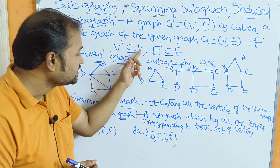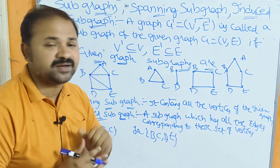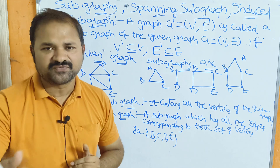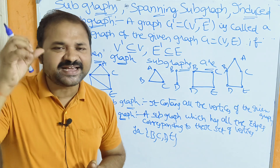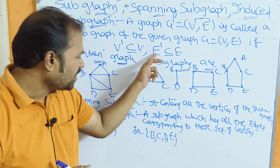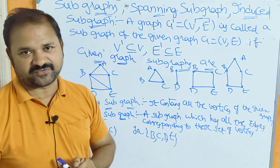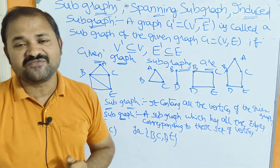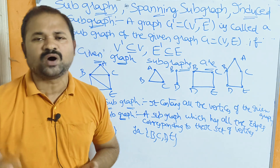All the vertices of the subgraph are subsets of the vertices of the given graph, meaning every vertex of the subgraph must belong to the given graph. If the graph contains five vertices, the subgraph may contain five, four, three, two, or one vertex. Similarly, E dash subset E means every edge of the subgraph must belong to the given graph. If the graph contains six edges, the subgraph may contain six, five, four, three, two, or one edge.